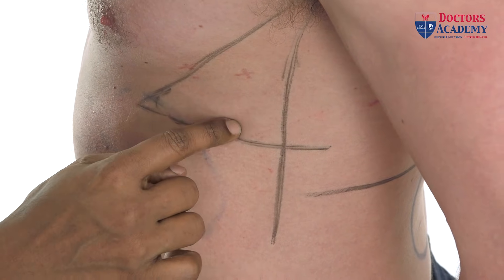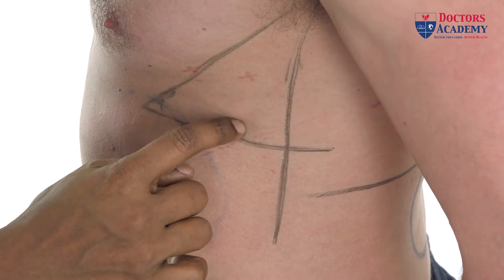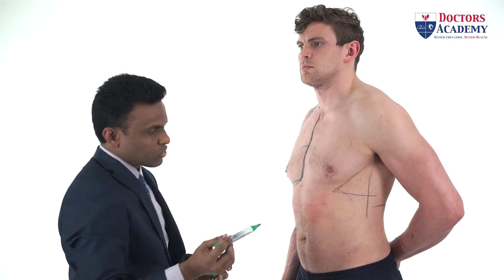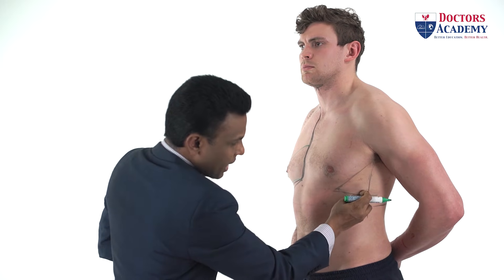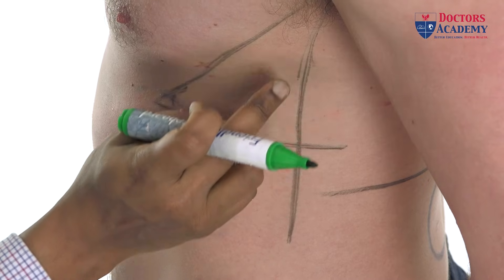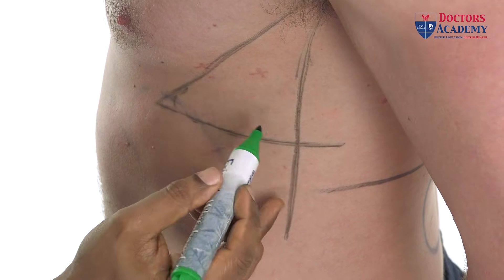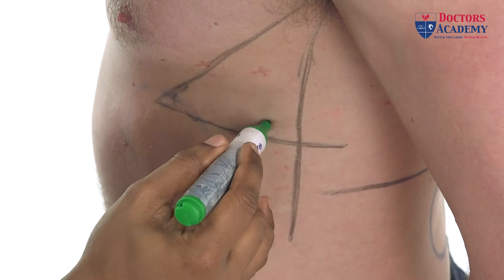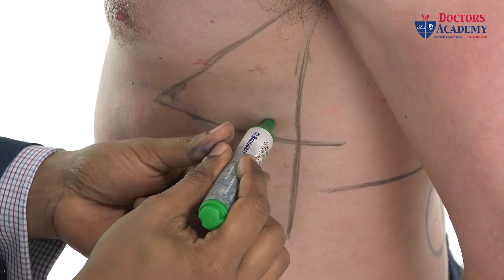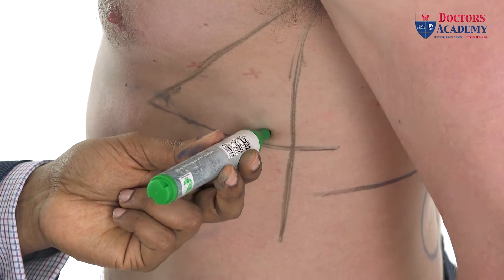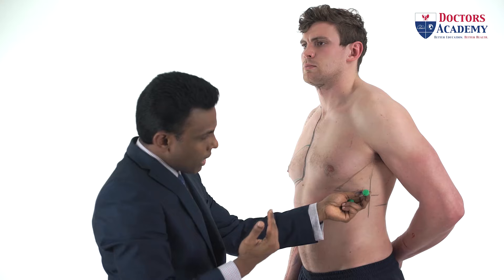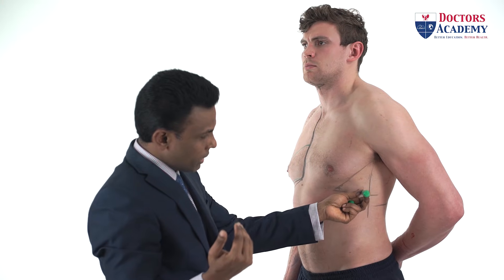This is the sixth rib corresponding to the fifth intercostal space. When you put a chest drain, you go anterior to the mid-axillary line because that is where the long thoracic nerve is, and you go to a point just above the sixth rib, anterior to it, to avoid injury to the long thoracic nerve.